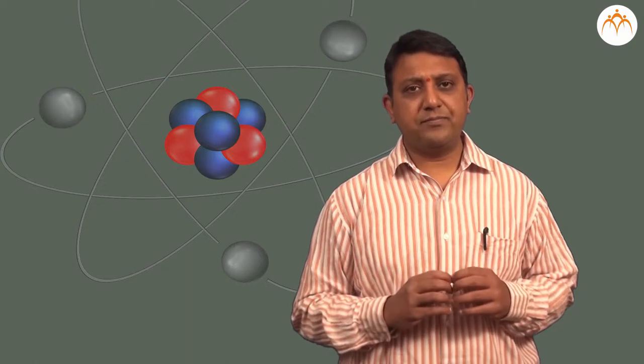You can have large open chains, closed chains. The open chains can further be straight or branched chains. Closed chain is like a ring structure. Because these chains are strong and stable, we can build on them and make more and more carbon compounds. This property of making strong and stable bonds is called catenation power.